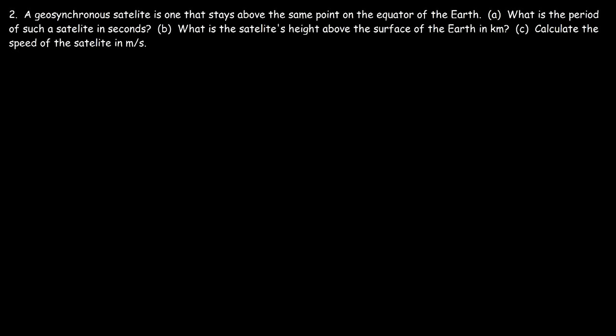Now let's move on to our second question. A geosynchronous satellite is one that stays above the same point on the equator of the Earth. What is the period of such a satellite in seconds? Since this satellite stays at the same point, it rotates at the same rate as the Earth — the same angular speed. It takes the Earth 24 hours to rotate on its internal axis, so the satellite takes 24 hours to revolve around the Earth.